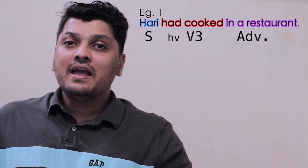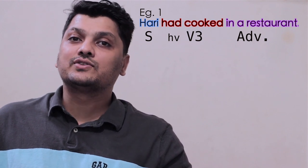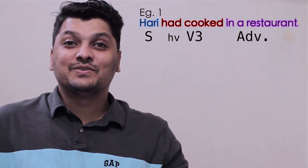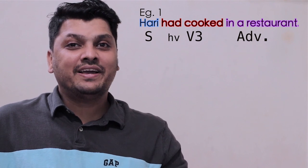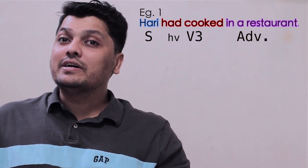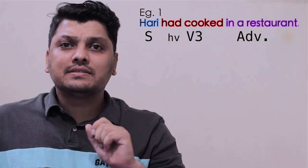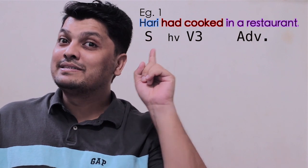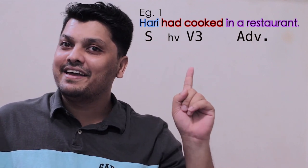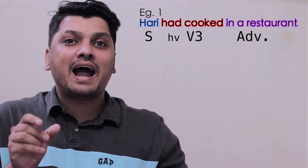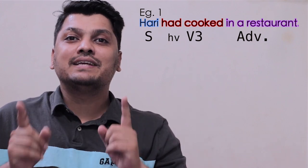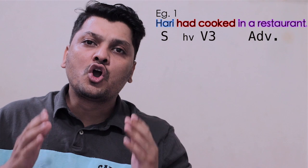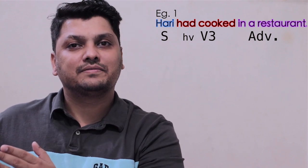Examples of past perfect: Hari had cooked in a restaurant. Subject: Hari. Helping verb: had. Verb: cooked — V3 form. Note that 'cooked' was also used in simple past, but there we did not use 'had'. Here, because we have 'had' before 'cooked', the sentence becomes past perfect. Second: Saurabh had thrown the ball. 'Thrown' is the third form of 'throw', and 'the ball' is the object.